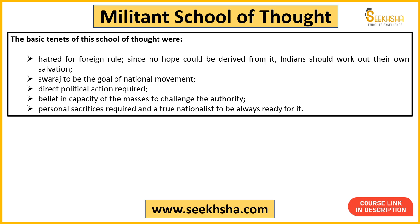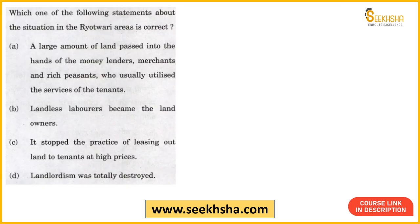The basic tenets of the Militant School of Thought included: hatred of foreign rule since no hope was visible for local people; Swaraj — self-rule — as the goal of the national movement; direct political action was required; belief in the capacity of the masses. At that time, Congress was not a mass party — that happened after Gandhi's Non-Cooperation Movement. Before that, Congress worked with only a few selected people without mass campaigning. The Militant School said: do mass campaigning, bring people forward — only when they unite can you challenge authority. They also spoke of personal sacrifice — a true nationalist must always be ready to sacrifice for the nation.